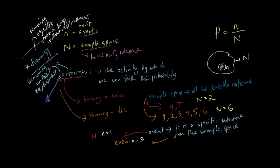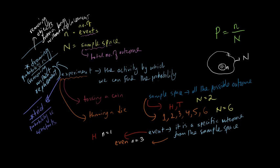Another type of experiment is where it doesn't matter what you do — the probability will be the same. These are known as trial experiments, meaning every time you do the activity the probability remains the same. For example, if you're tossing a coin or throwing a die, the probability is exactly the same each time. So in a trial experiment, probability is constant, whereas in a draw experiment, probability is changing.